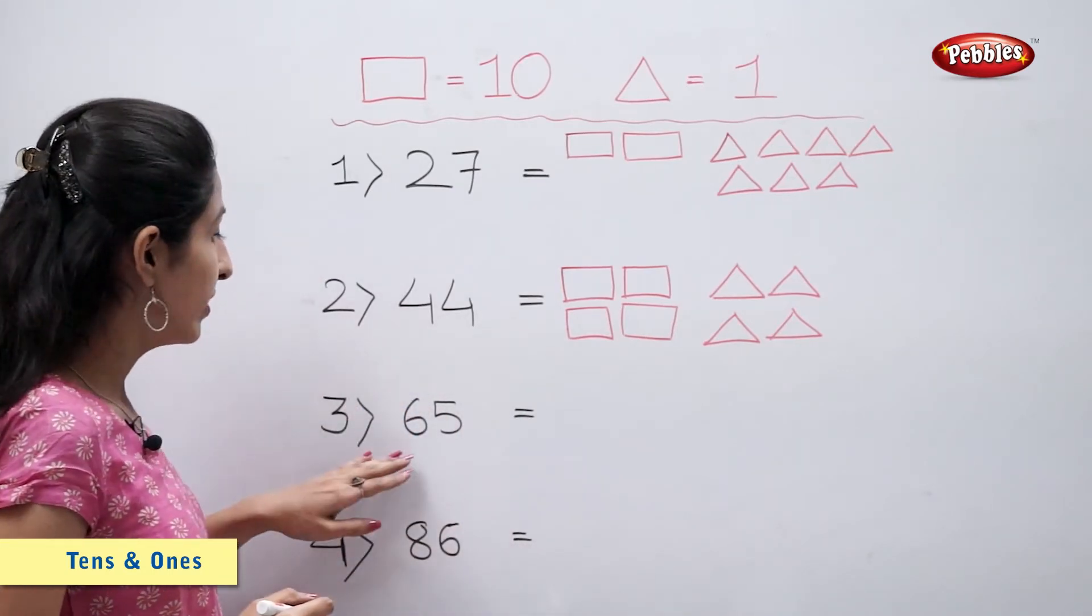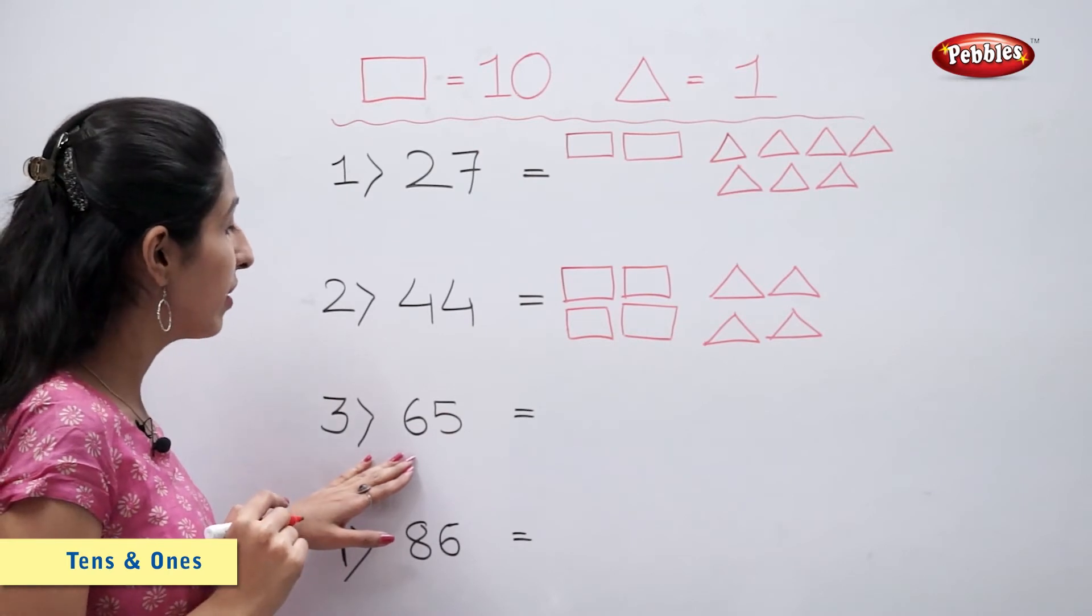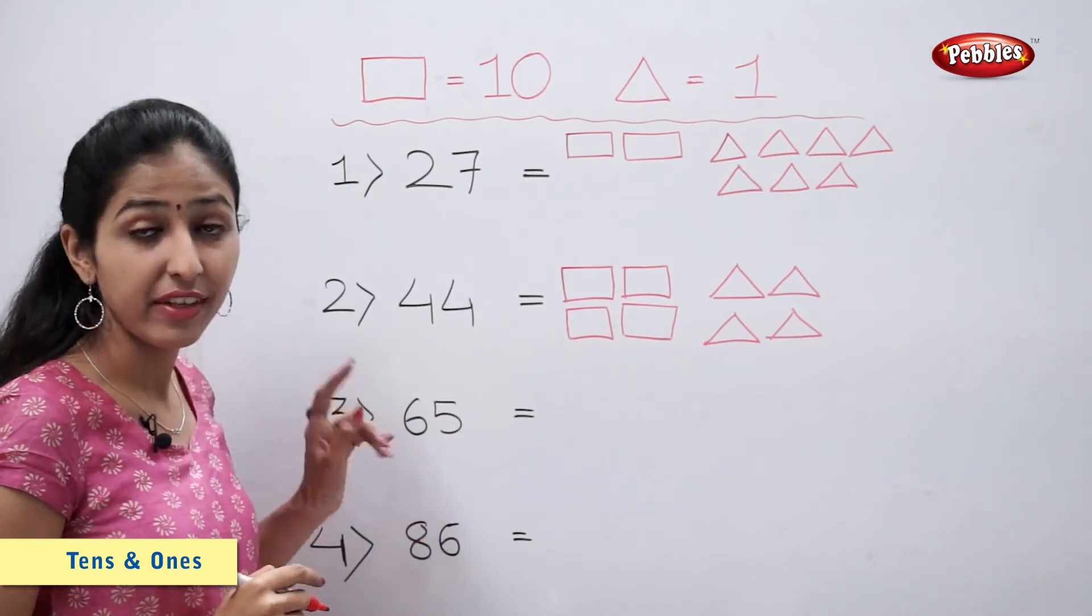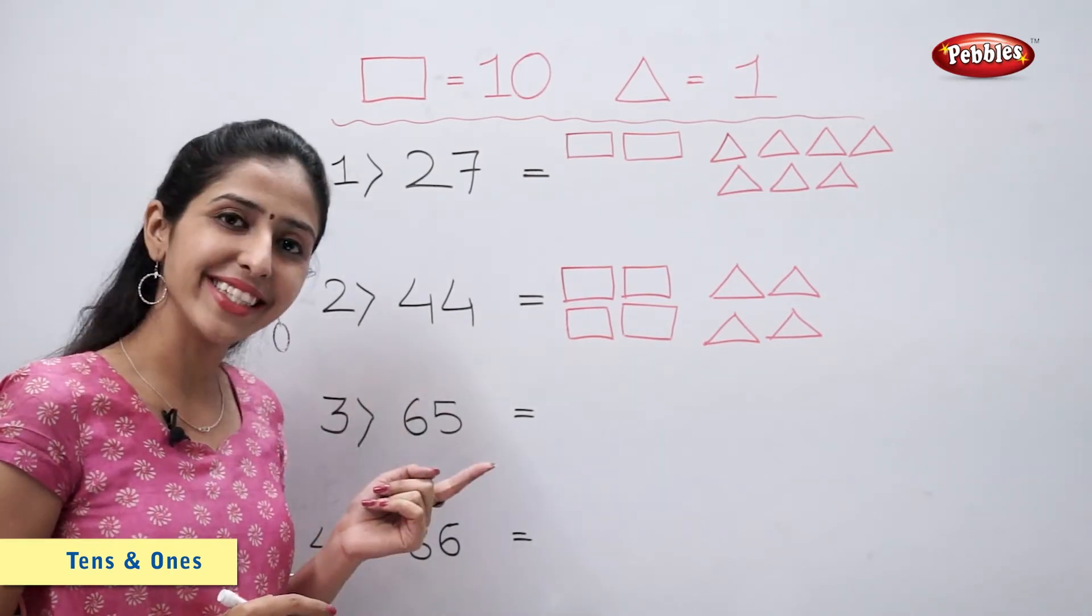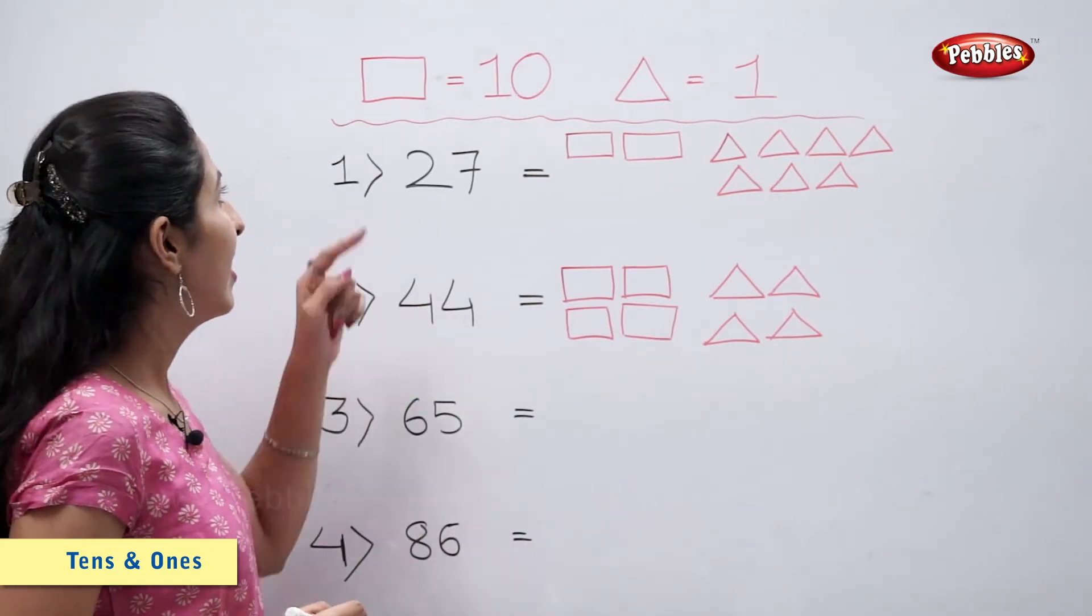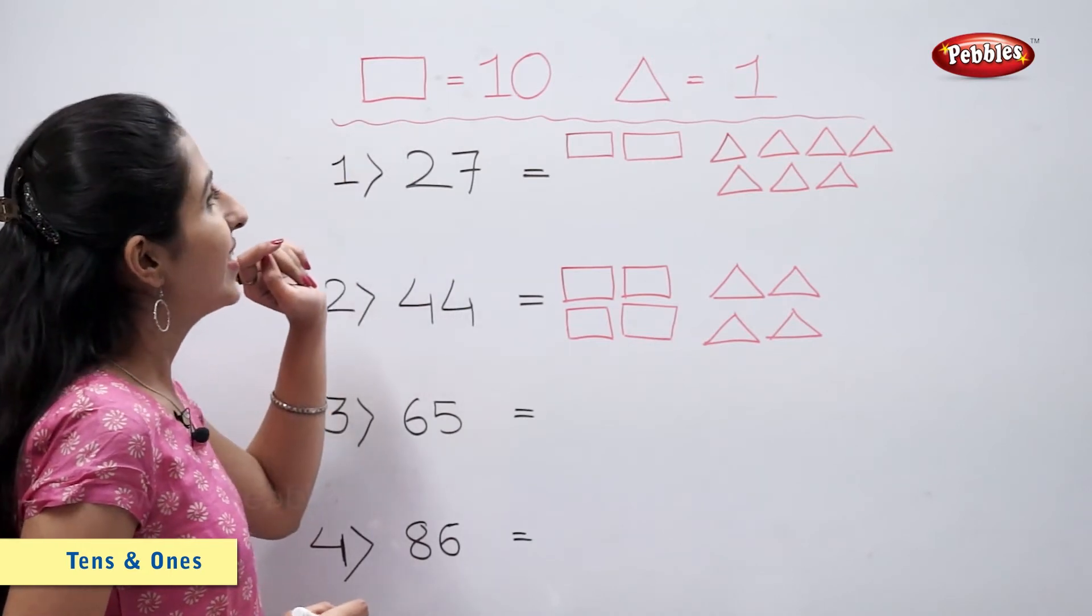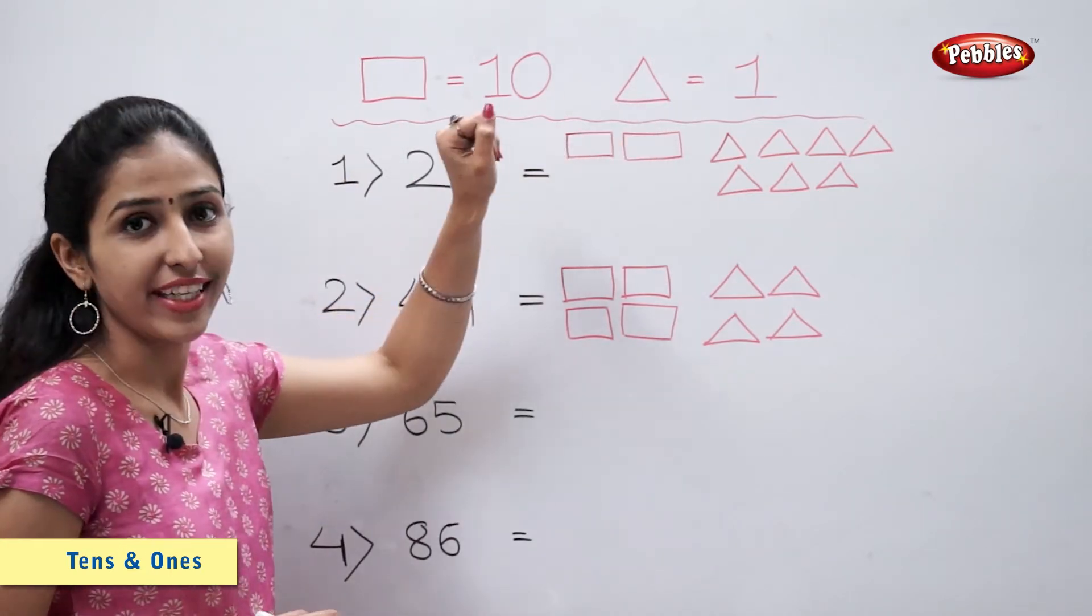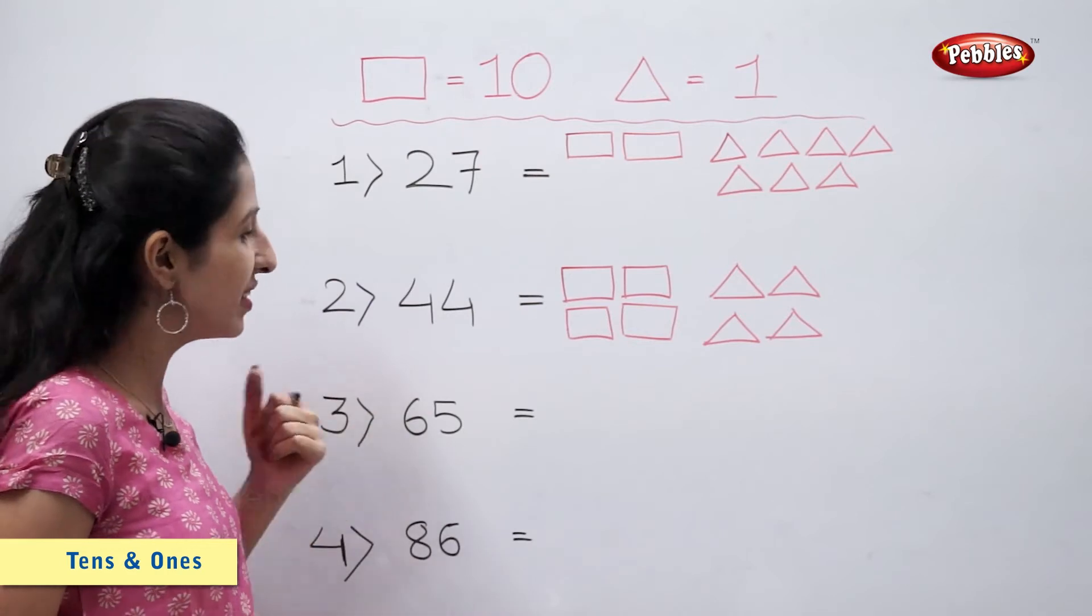Now number 65. 65 is equal to 6 tens and 5 ones. So I will use 6 rectangles and 5 triangles to make number 65.